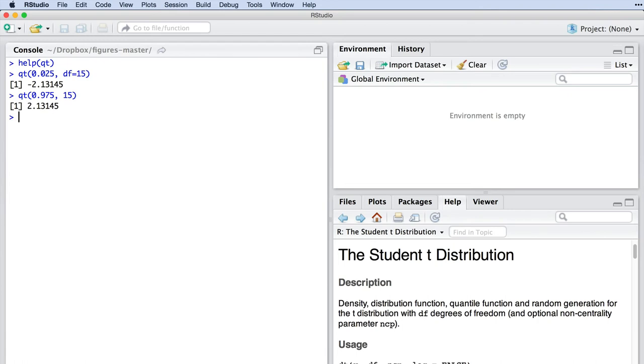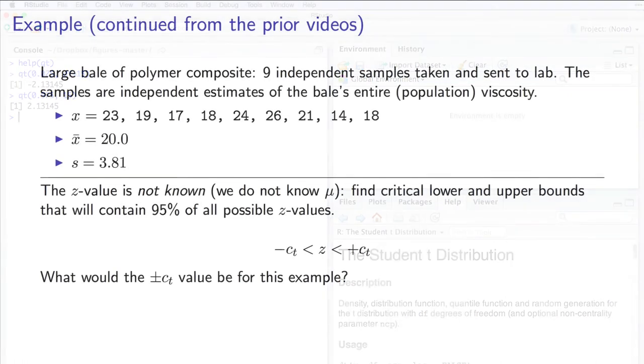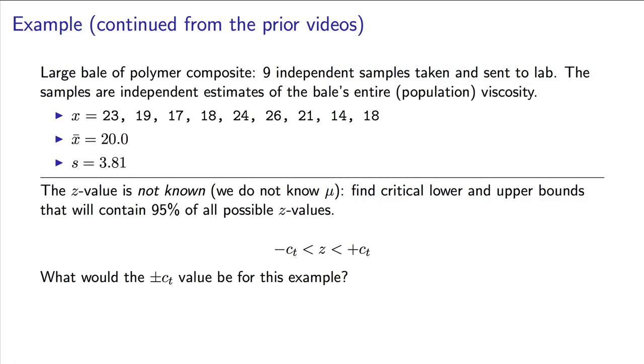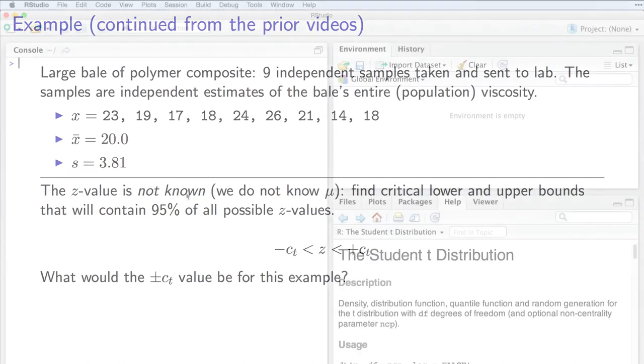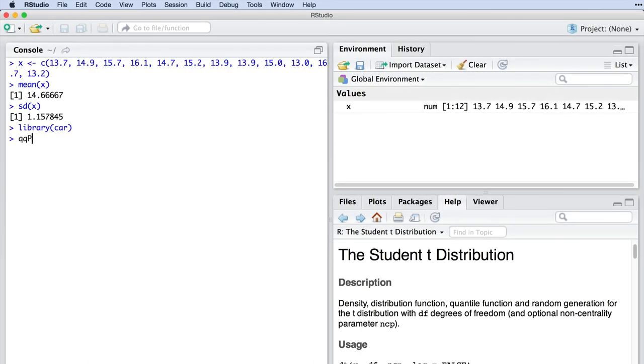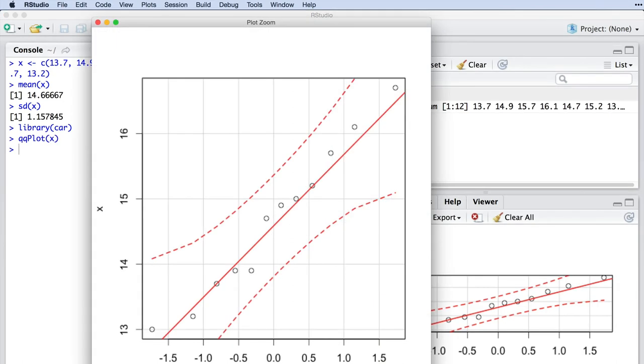So let's use this now and return to the example from the earlier video. We had these 9 measurements, and our goal is to find a confidence interval for the true mean. We don't know the standard deviation, but we can estimate it from the data as s equals 3.81. If we want to use the new concepts we just learned, we also have to ensure that these 9 raw data samples are normally distributed. We have the q-q plot to test that, and the plot here shows that it is normal.